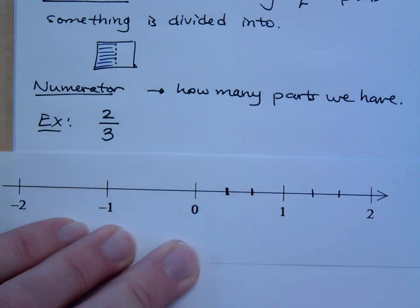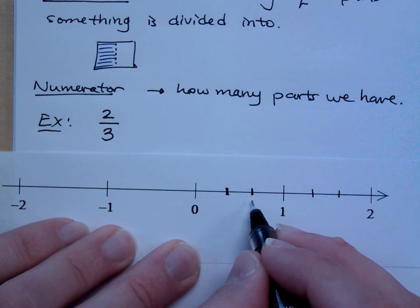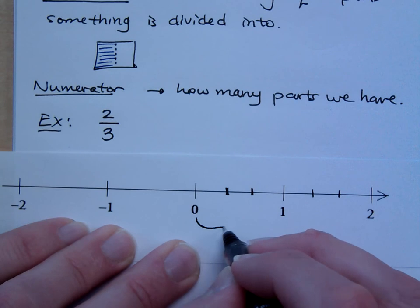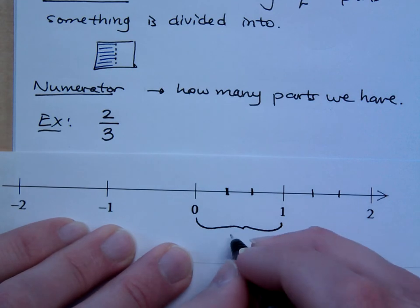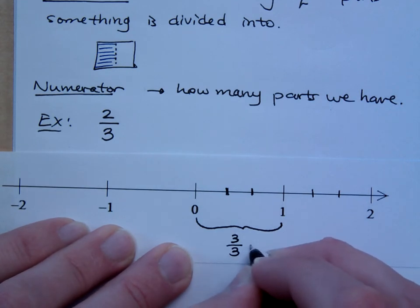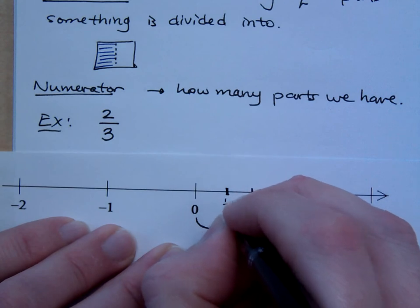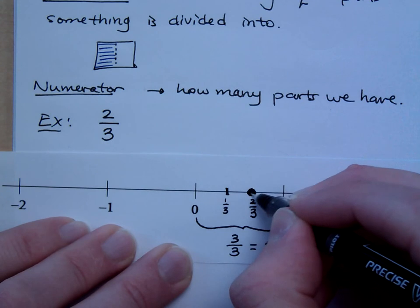When I have two-thirds, where does two-thirds go? This whole piece right here is one unit. How many thirds are in one whole unit? There are three-thirds in one whole unit because three divided by three is one. If I want to take two-thirds — two-thirds is less than three-thirds. So on the number line, you've got one-third here and you've got two-thirds here. So this is where my two-thirds is located.